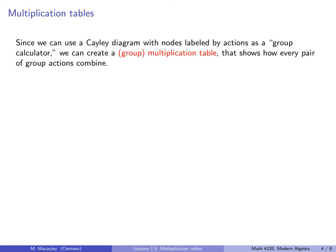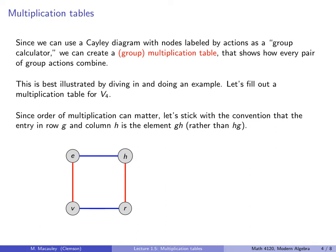Now to the main topic of this lecture, multiplication tables. The idea is, since we can use a Cayley diagram with nodes labeled by actions as a group calculator, we can create a group multiplication table that shows how every pair of group actions combine. This is just like what we did in elementary school with multiplication tables of numbers 1 to 10, 1 to 12, but now we have group elements. This is best illustrated by diving in and doing an example.